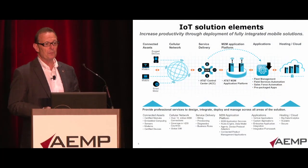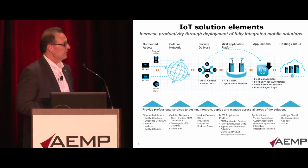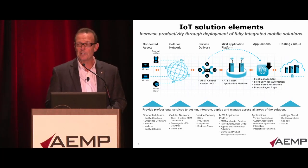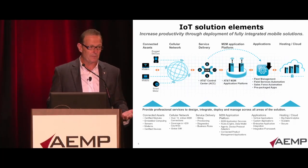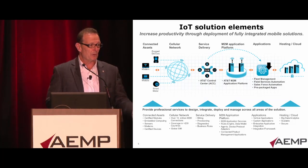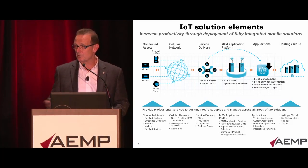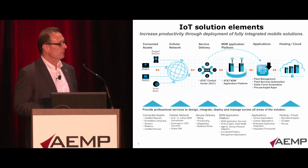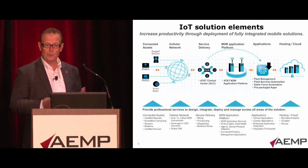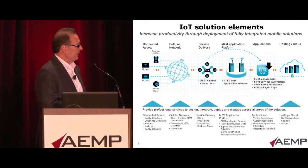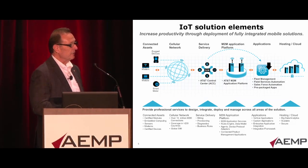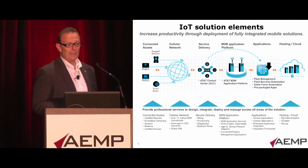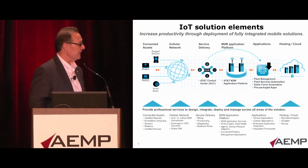I wanted to show you this slide because several of you, from what I've heard as we've talked and gotten to know each other over the last few years, are looking at different kinds of solutions and trying to make decisions about which pieces you want to buy versus build, what's available from your OEMs, and what's available from third parties who are also partners and members of AEMP. This slide really illustrates, as you go through that decision-making process, that the ecosystem consists of these key elements of the solution, and the decisions you'll make as you implement various aspects of that.